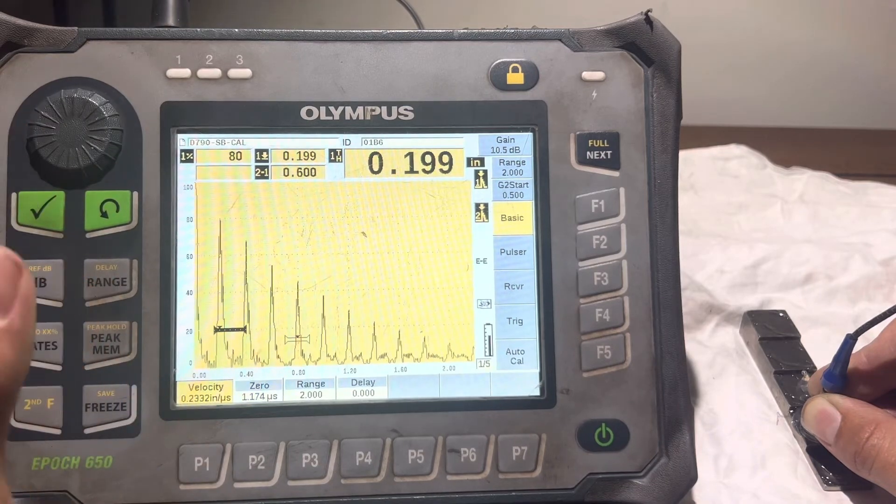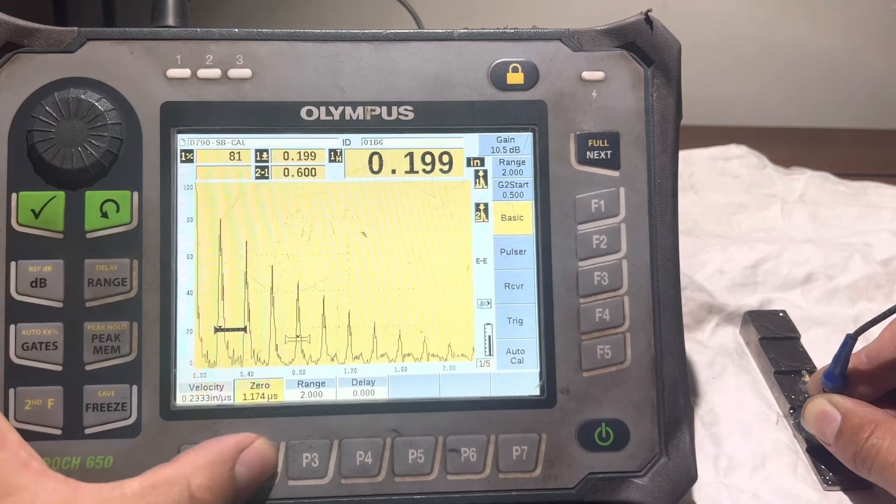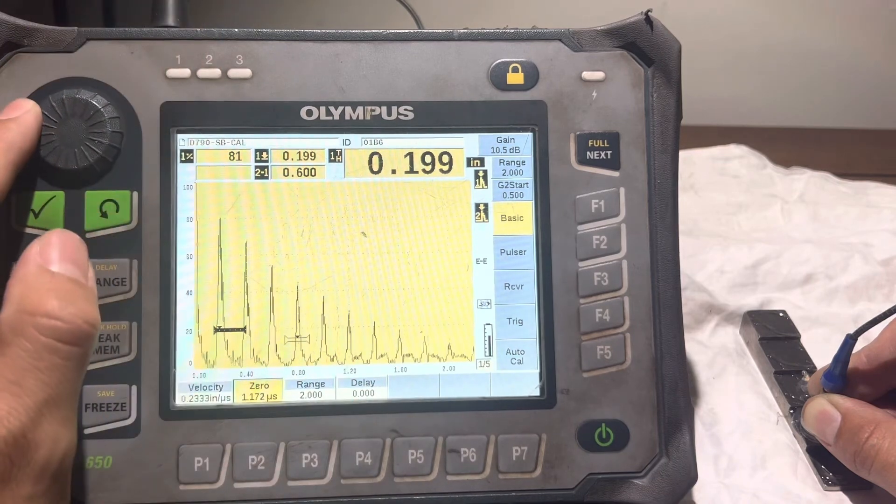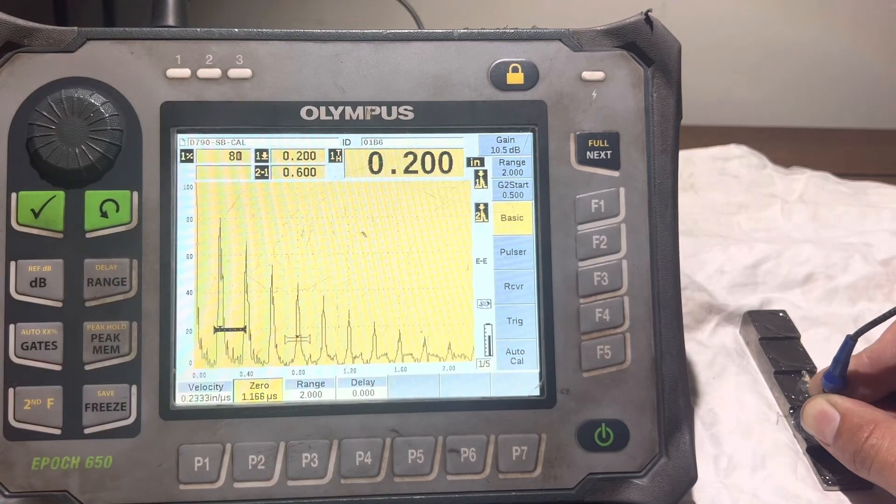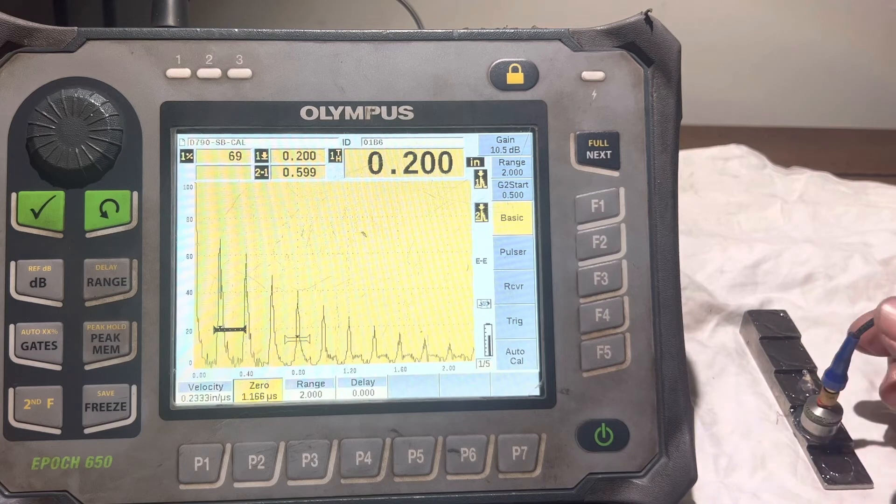If you want it perfect, you just move your velocity a little bit. And if you want this perfect, you move your zero a little bit. It should be right about there. As of right now, we're actually calibrated.